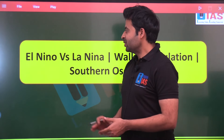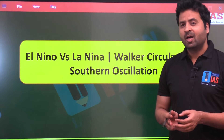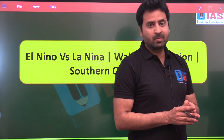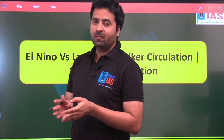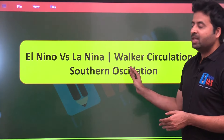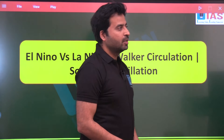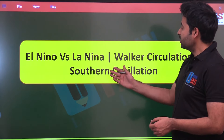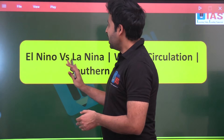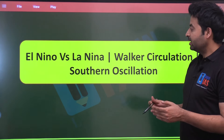Welcome to Tarun IAS. You see terms like El Niño, La Niña, Southern Oscillation, and Walker Circulation. Whenever you read any article related to geography or environment, you come across these terms, and sometimes they become very confusing. In this lesson, we will not only learn what these terms mean but also how they are related to each other.